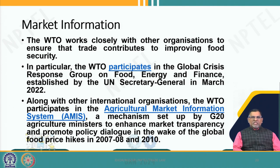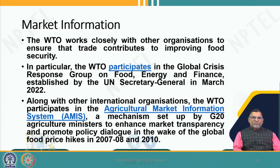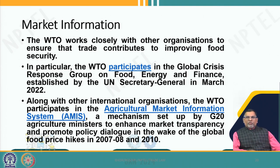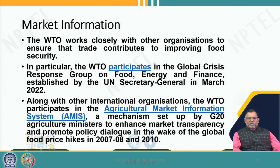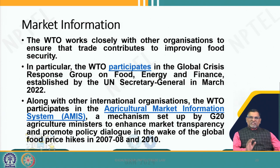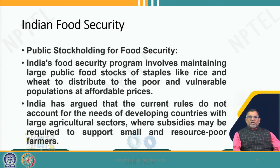Organizations like the UN Secretary General have declared in 2022 about the global crisis response group on food, energy and finance. Other setups were also made, such as the Agriculture Market Information System by G20 countries. Other than the European Union and the United States, there is still a severe problem of agriculture malnutrition or hunger in most G20 countries. Now it is the G21 countries, and they have also considered food security issues.